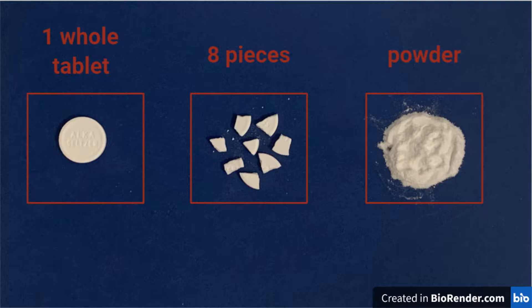Now open the Alka-Seltzer packages and get three tablets. Keep one the way it is and take the second tablet and break it into eight pieces. Finally, take the third tablet and grind it into a powder using a mortar and pestle or by crushing it in a bag.